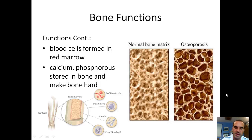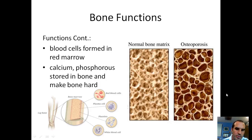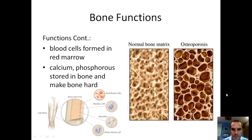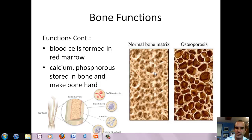Bones also do some things below the surface that you can't see. Inside the bone is where red blood cells are formed in the red marrow. The actual hard part of the bone is where calcium and phosphorus are stored, and they can be put into the bone and then taken back out when your body needs it.